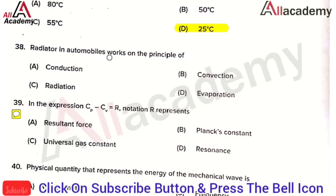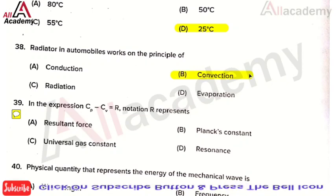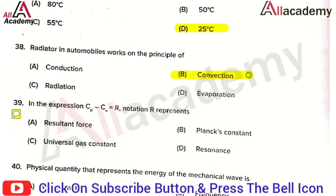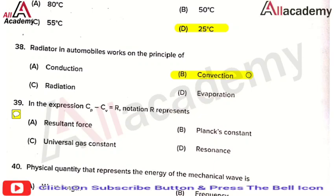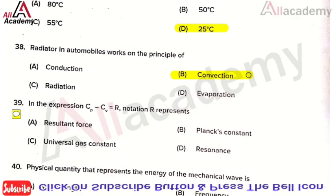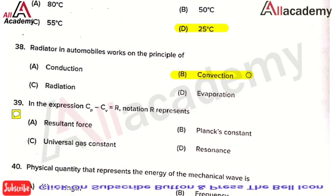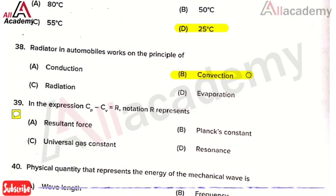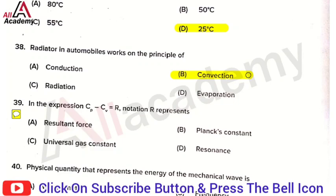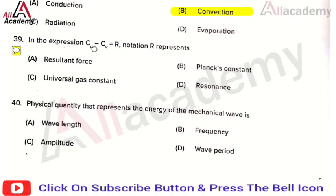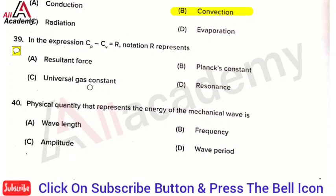The next question: the radiator in automobiles works on the principle of — the right answer is convection. There are three types of heat transfer modes: conduction, convection, and radiation. Radiators work on convection, meaning they need a fluid to transfer heat energy. In automobile radiators, coolants or water are used — the water absorbs heat, making convection the right answer.